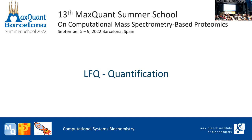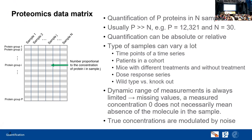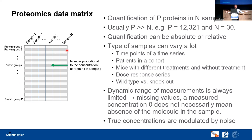When you conduct an experiment you usually end up with a matrix: you have several samples — in this case n samples — and there are protein groups which are quantified. Usually you have much more proteins than samples, and in this table there should be intensities of these protein groups within samples. These measurements have a limited dynamic range, sometimes missing values, and concentrations are modulated by noise, so mass spec data is not inherently quantitative.